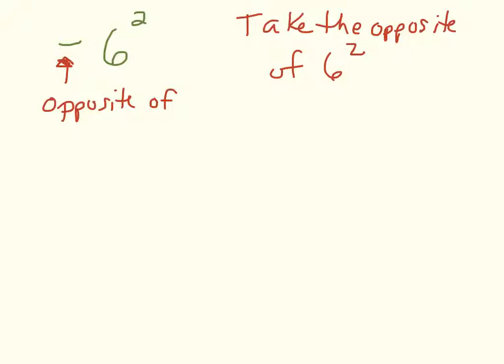That is a huge difference in the order of operations with integers. Order of operations says to apply exponents before you do any adding or subtracting. So let's finish that problem. What we're going to do is take the opposite of 6 times 6. 6 times 6 is 36, so we end up with an answer of negative 36.